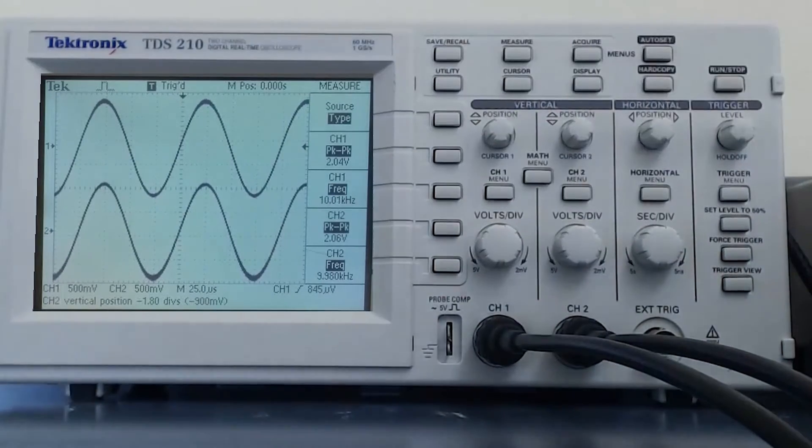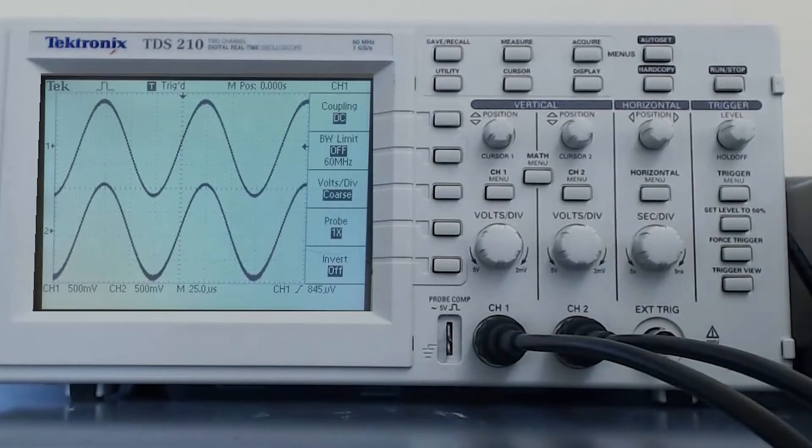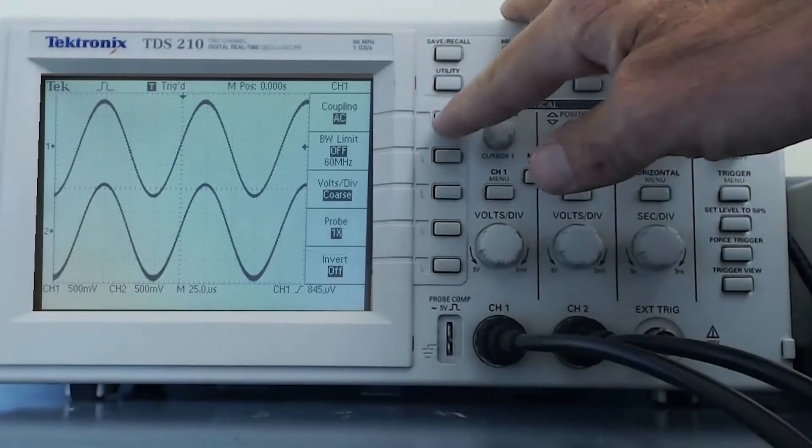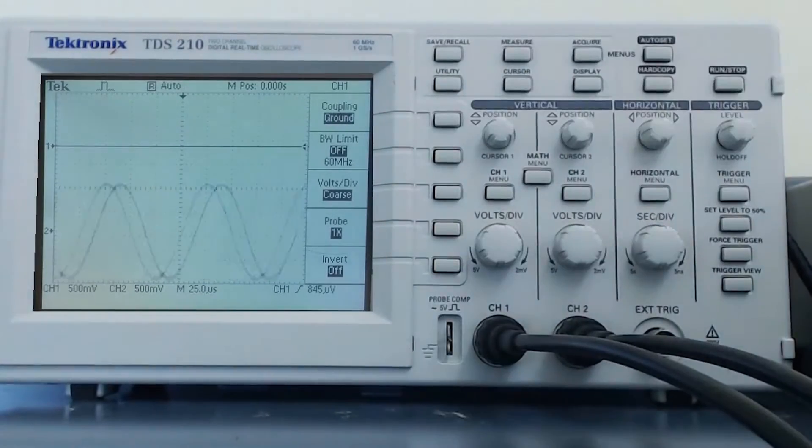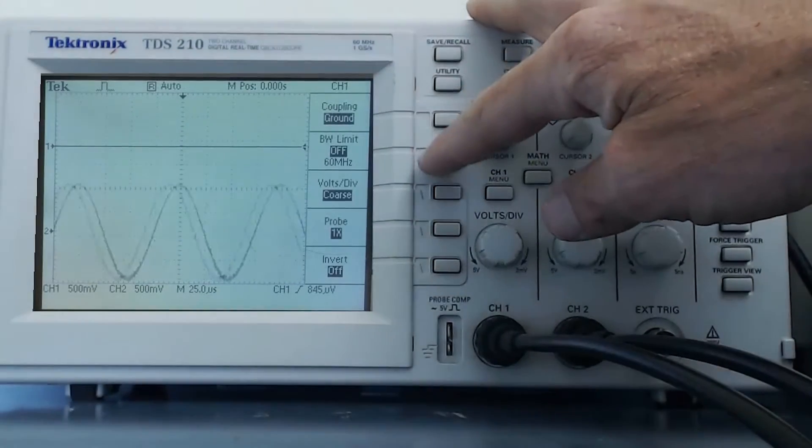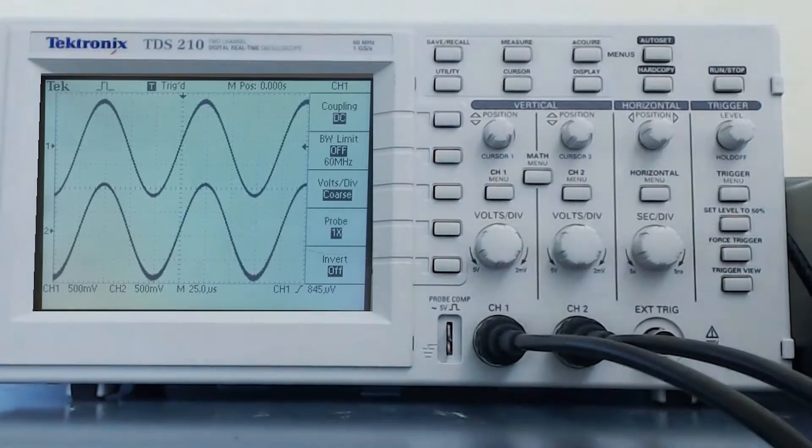If I press the channel 1 menu button, the right-hand side of the screen changes. The top menu item is called coupling. The options for coupling are DC, AC, and ground. Most often, when we are looking at circuits on a breadboard, we want this to be set to DC. AC coupling filters out any DC component there may be with the signal. And ground obviously makes that input zero.